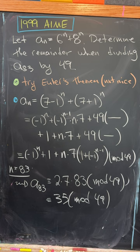So instead what we'll do is write 6 as (7-1) and 8 as (7+1), and then expand them using the binomial theorem. Of course, after the first two terms, we get multiples of 49, which will be 0 mod 49.